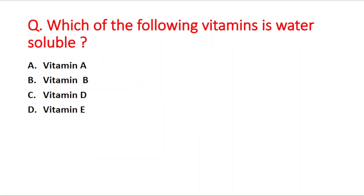Next question: which of the following vitamins is water-soluble? Option A is vitamin A, B is vitamin B, C is vitamin D, D is vitamin A. As covered in the first part, some vitamins are water-soluble and some are fat-soluble. The water-soluble vitamins are B and C.